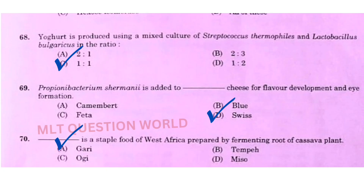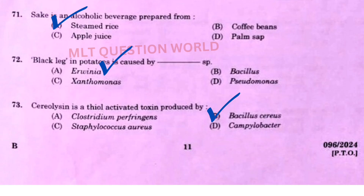Next one: Yogurt is produced using a mixed culture of Streptococcus thermophilus and Lactobacillus bulgaricus in the ratio — the right answer is option A. Next one: Propionibacterium shermanii is added to dash cheese for flavor development and eye formation — the right answer is option D, Swiss. Next one: Dash is a staple food of West Africa prepared by fermenting the root of the cassava plant — the right answer is option A, Gari.